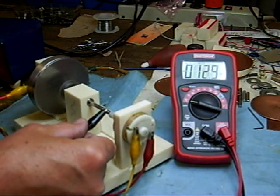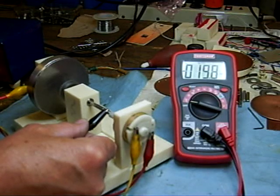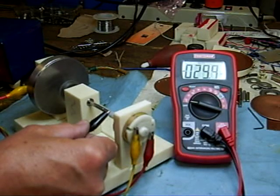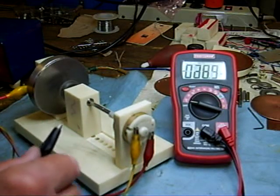Touching this on the shaft, which is hooked to that, you can see we get minus, not much, minus 22 millivolts. Turn up a little higher, 25, 26, 28, 29, about 30.